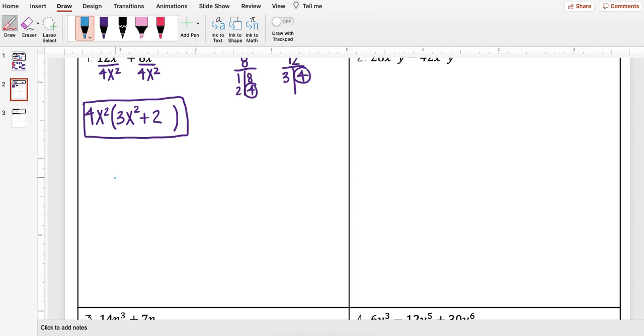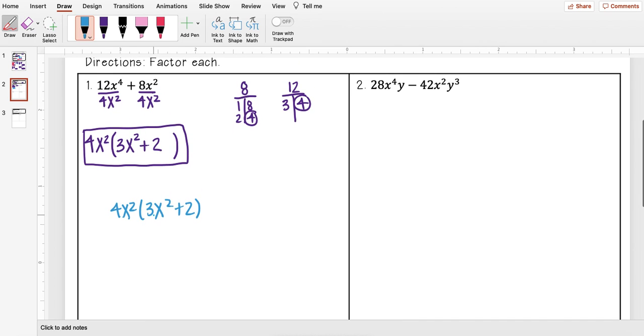Something nice with this is you could check your work. Because with factoring I know if I multiply these together I should get my original expression. And so when I multiply 4x squared times 3x squared, 4 times 3 I get 12. x squared times x squared I get x to the fourth since I add those exponents. And then 4x squared times 2 I get 8x squared. And I see I do end up with my original expression so I'm good.